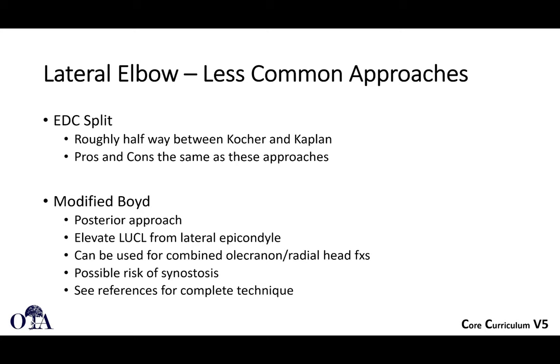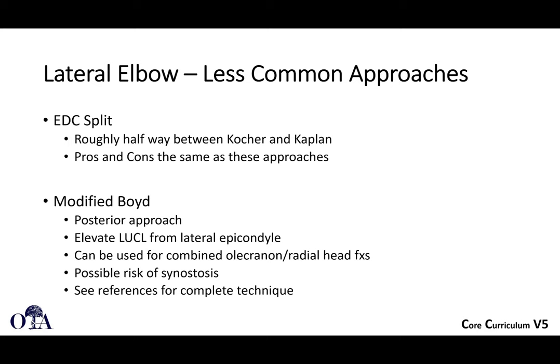Other approaches include the EDC split, which is between the Kocher and Kaplan approaches with similar pros and cons, and is useful for instrumenting the radial neck and shaft during arthroplasty. The modified Boyd posterior approach can be used for combined olecranon and radial head fractures. References for these techniques will be listed at the end of the next video. We'll pause here and pick up in the next video, recapitulating the treatment algorithm and focusing more on treatment.